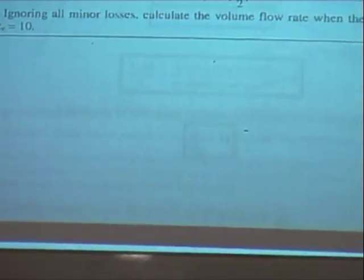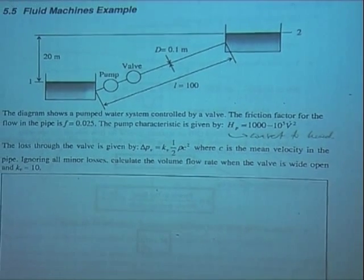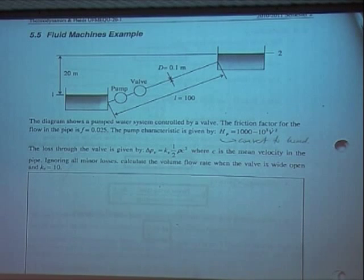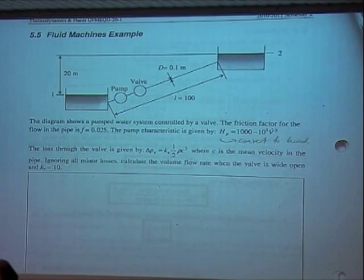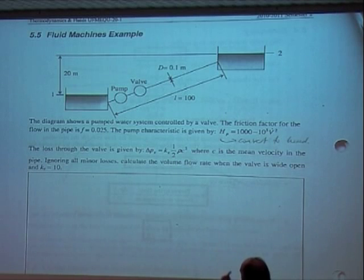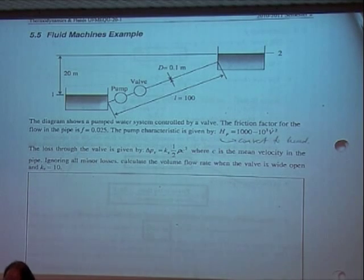We've got a system that looks like this — two open reservoirs, a pump and a valve in the system, a length, a diameter, and points 1 and 2. The height of point 2 is 20 metres above point 1. We've been given the friction factor, so we don't have to determine it, and we can go through and work out what's going on with this system.